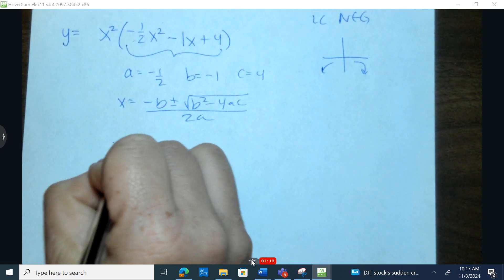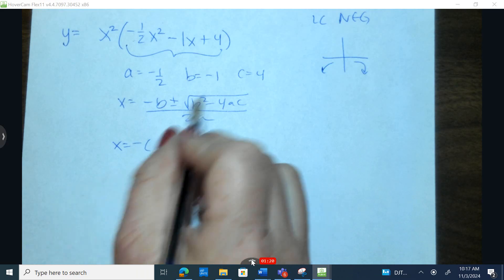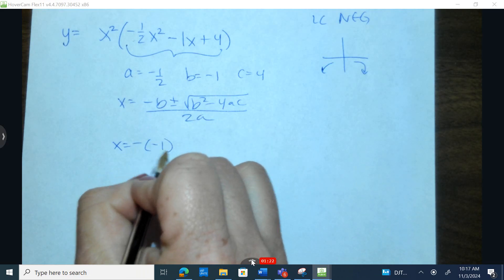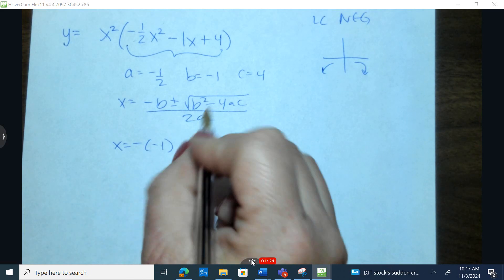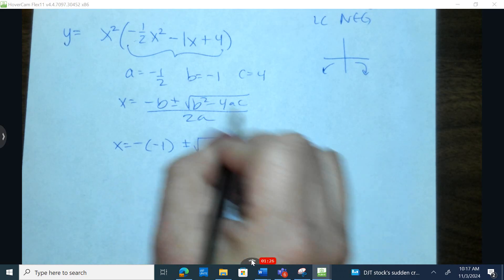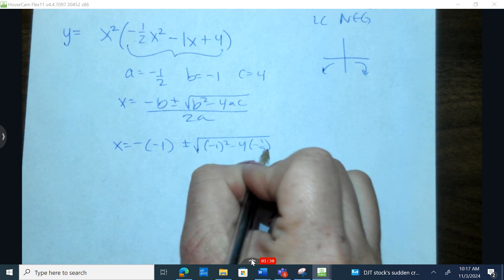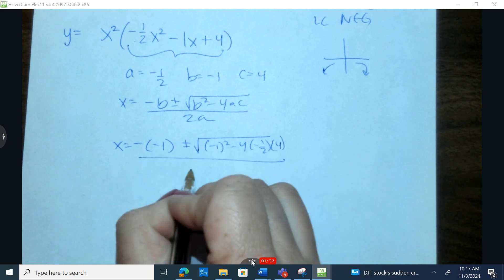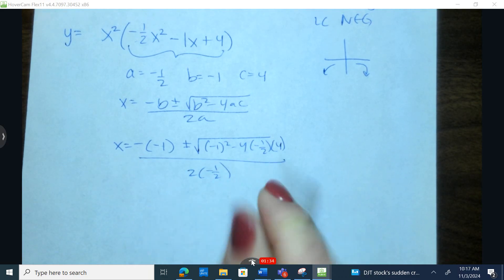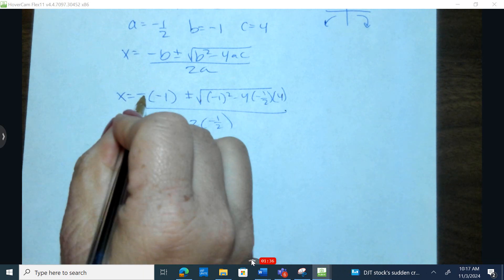So negative, and then I plug in a negative 1 for b, that gives us a positive. Two negatives make a positive. Negative 1 squared minus 4ac, all divided by 2 times a. Two negatives make a positive.